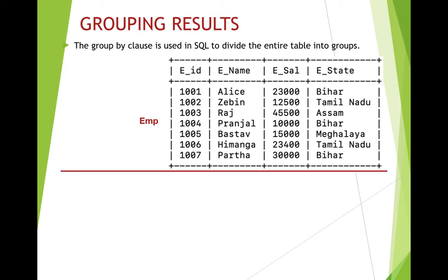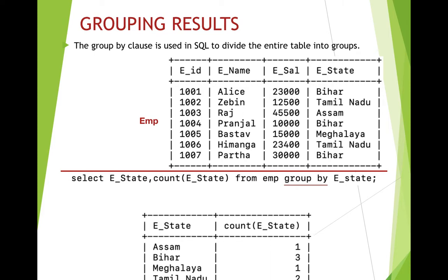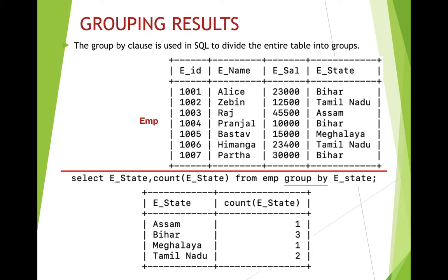To do this we use the aggregate function COUNT. If I write: SELECT e_state, COUNT(e_state) FROM emp GROUP BY e_state — it will take out all the unique states and count how many persons are there from each state. From Assam one, Bihar three, Meghalaya one, Tamil Nadu two. This is how we use the GROUP BY clause.